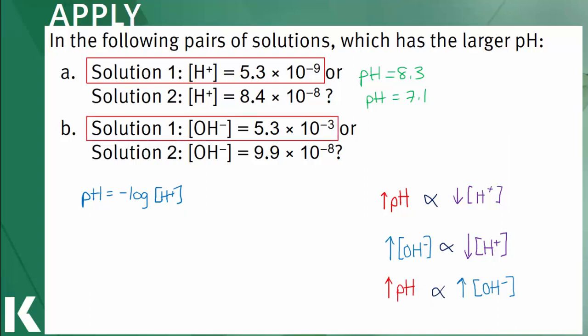Again, we can use our calculations to confirm this. The pH of solution 1 is 11.7 and the pH of solution 2 is 7.0.